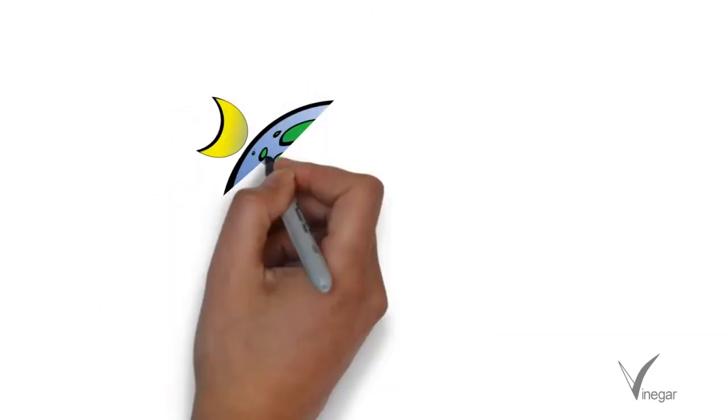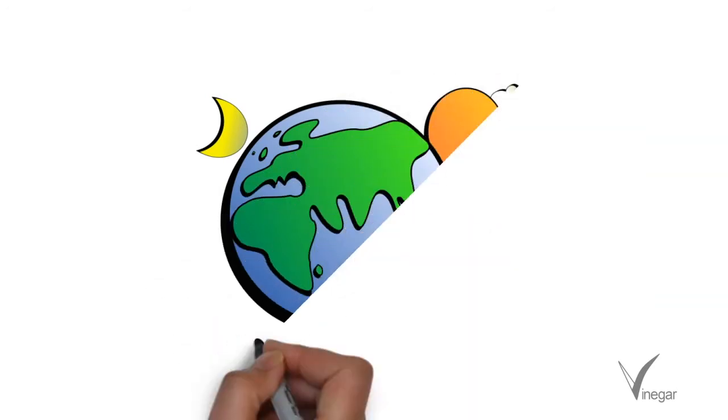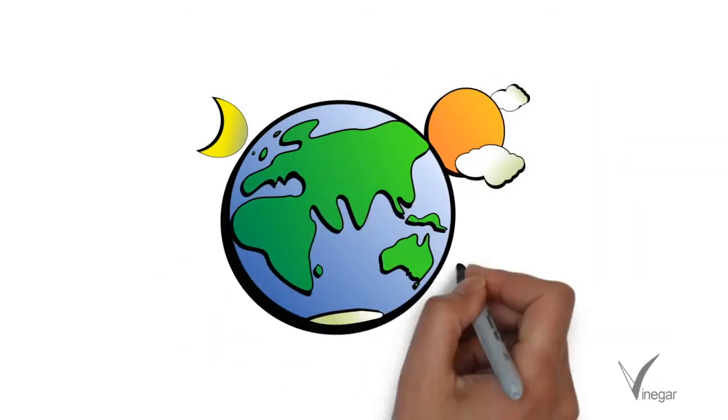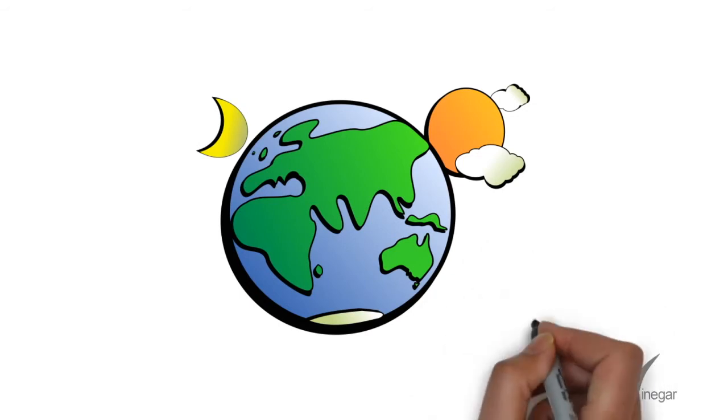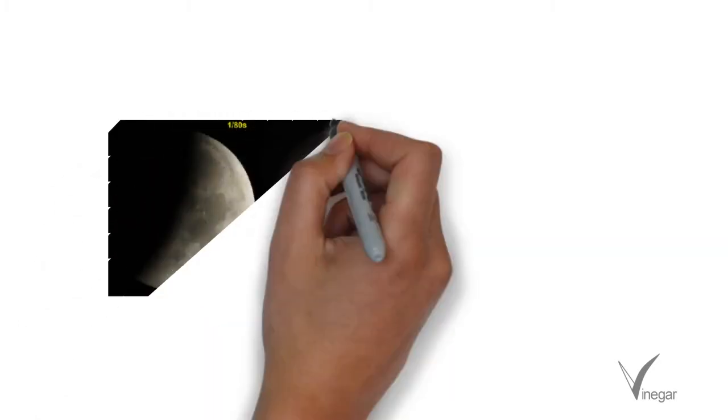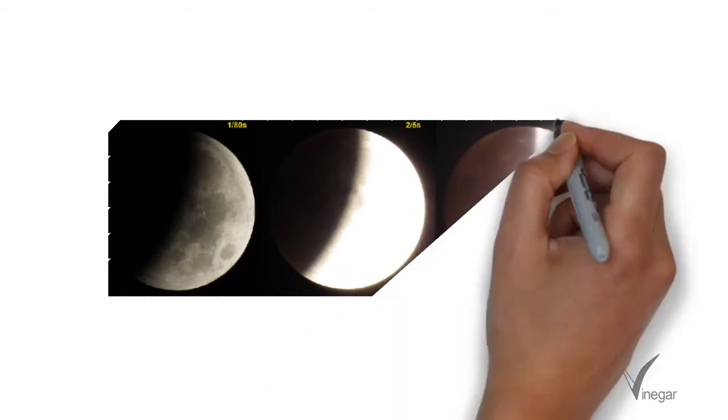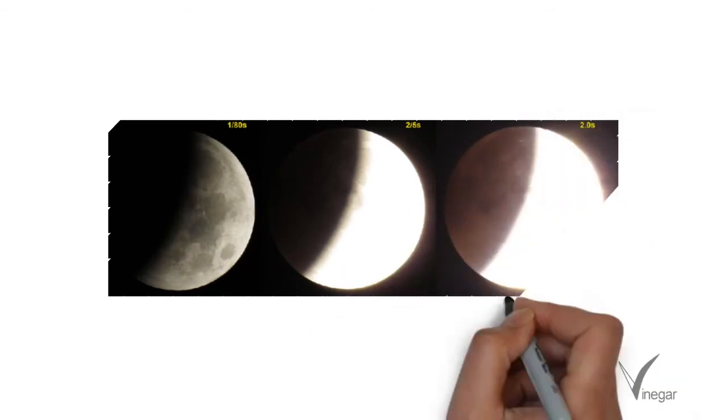Next proof is that the sunrise and sunset takes place at different times at different locations. This would not have been possible if earth was flat. Next proof is the lunar eclipse. During lunar eclipse the shadow of earth on moon is spherical, proving that earth is spherical.